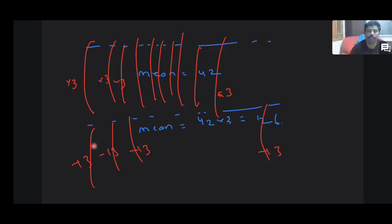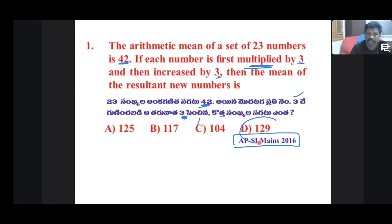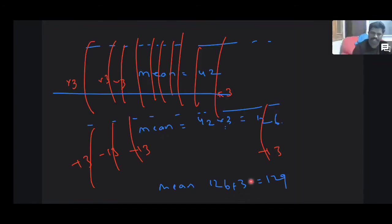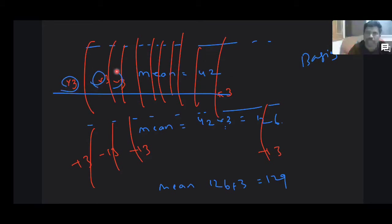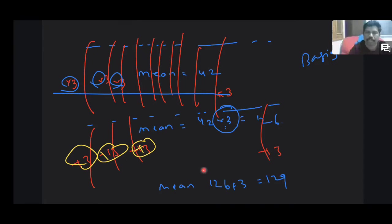The answer is 129. It is very easy. You have to understand this rule. The rule relates to groups — these groups are three groups. If you operate on each group by multiplying by 3 and adding 3, the mean transforms accordingly.